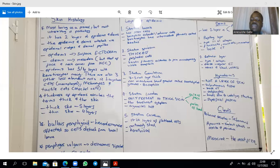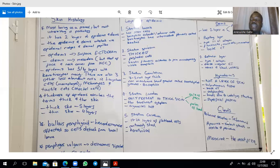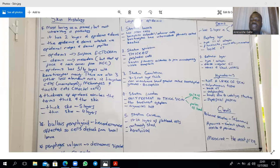The sweat glands — the merocrine or eccrine ones — secrete normally via ducts. The apocrine sweat glands are found in the axilla and the perineum; they develop with puberty and secrete by pinching off their apical parts. The eccrine sweat glands contain three types of cells: clear cells, which have abundant glycogen; dark cells, which have abundant rough endoplasmic reticulum; and myoepithelial cells, which are contractile. The apocrine sweat glands similarly have myoepithelial cells and ducts, but secrete by apical pinching.